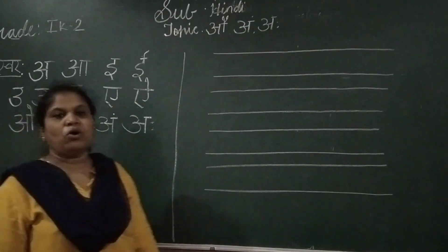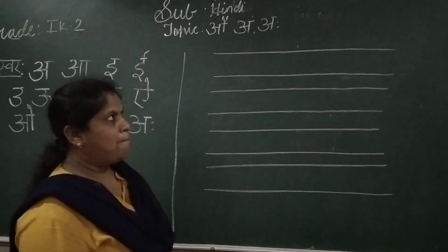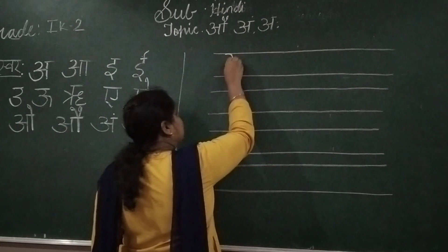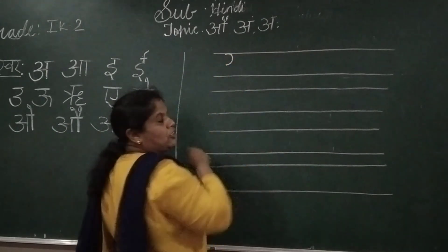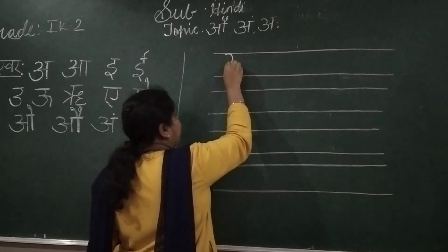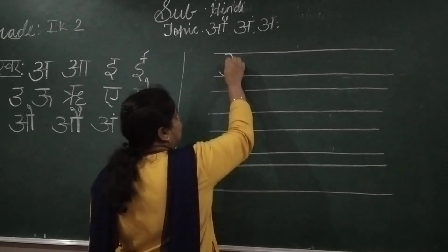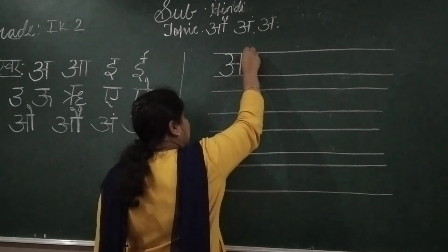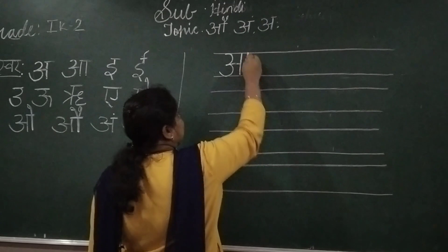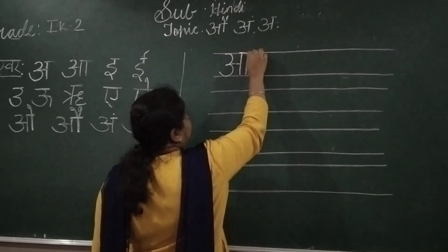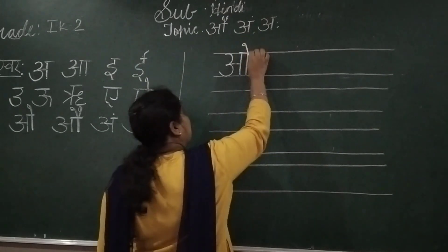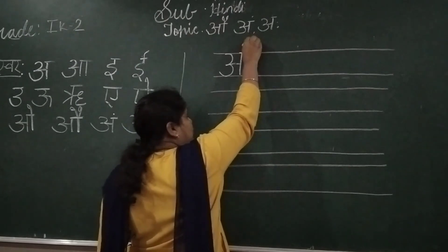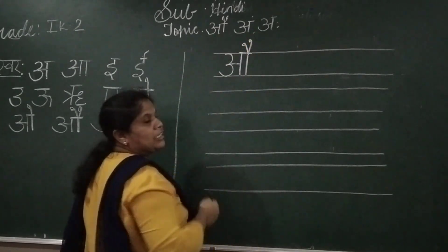Now I will show you how to write letter Au, Am, Aha. We'll start children. One backward curve — you have learned the strokes in the starting itself. Then one sleeping line, one standing line (khadi rekha), and one shiro right on top. Then from here, one slant line — this will become the letter O. If you add one more slant line like this, this is letter Au.